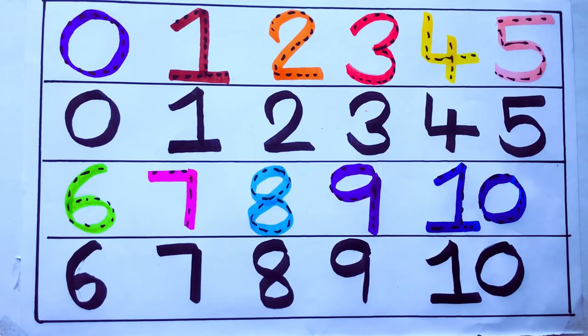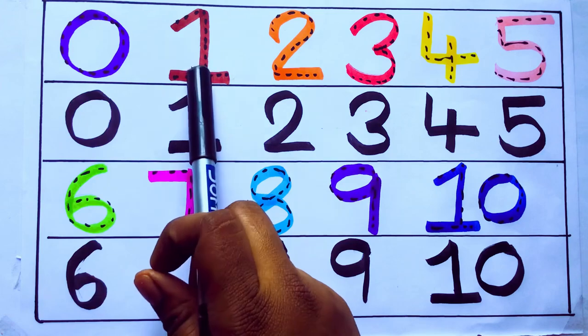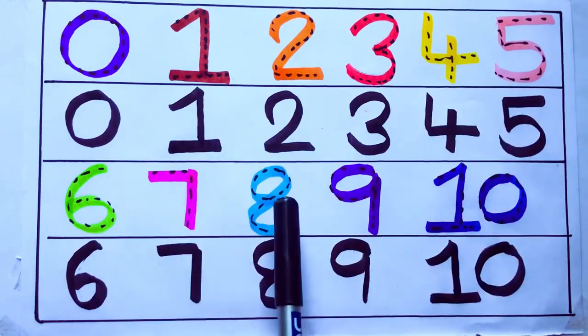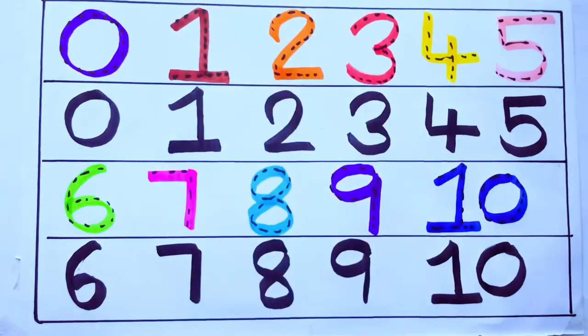Let's review the numbers. 0, 1, 2, 3, 4, 5, 6, 7, 8, 9, 10. Okay, bye kids.